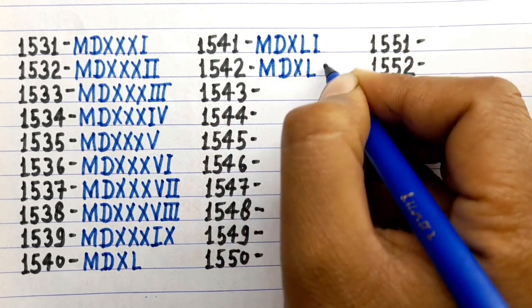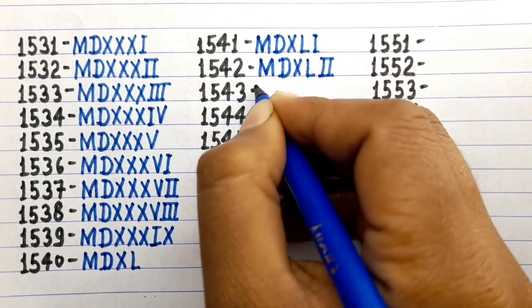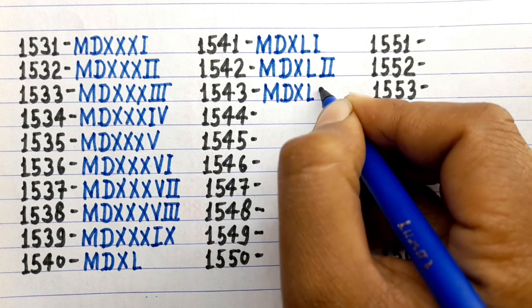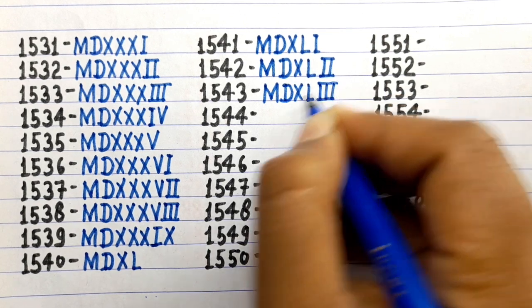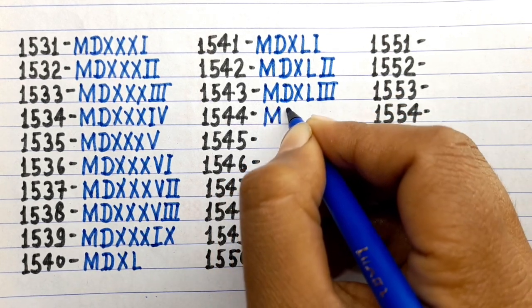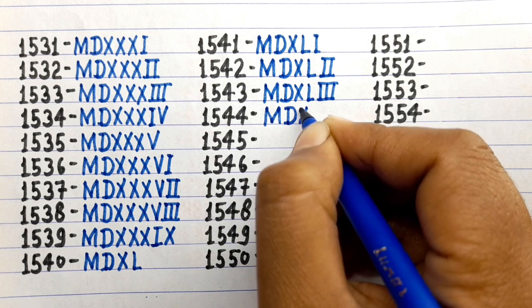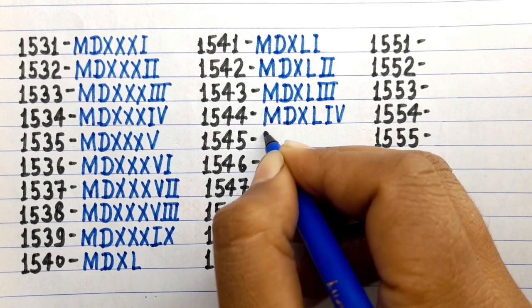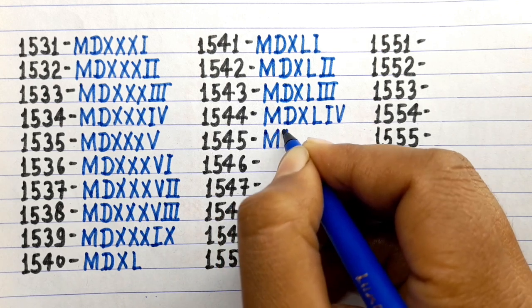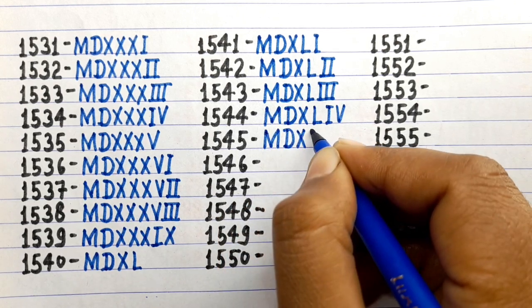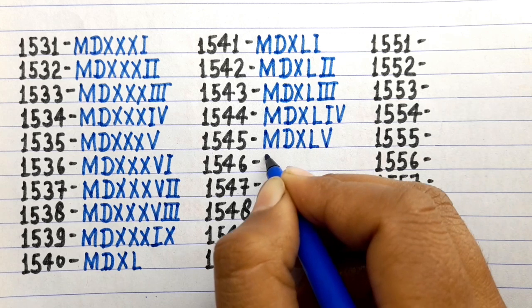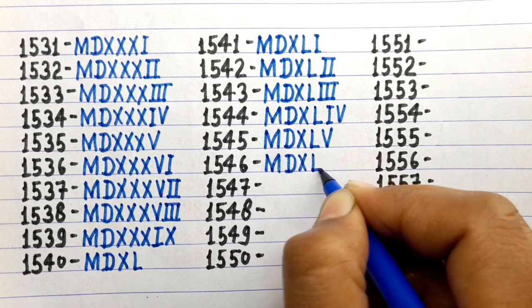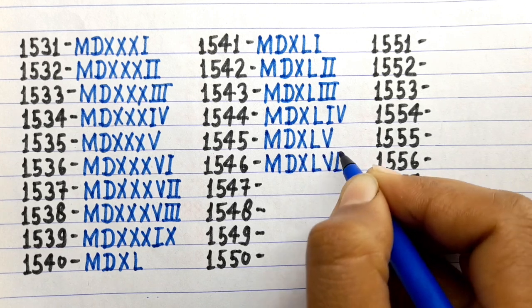1542 MDXLII, 1543 MDXLIII, 1544 MDXLIV, 1545 MDXLV, 1546 MDXLVI.